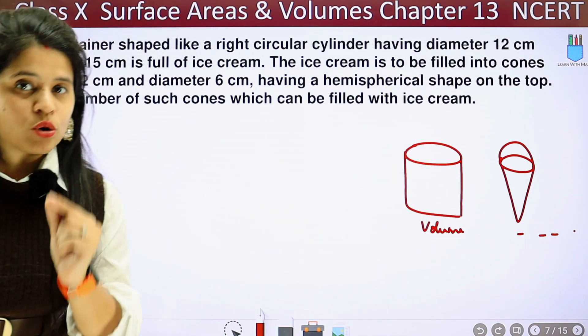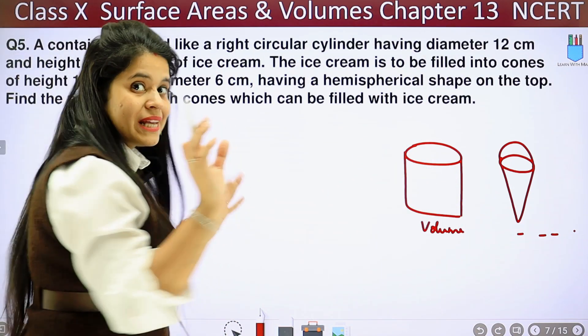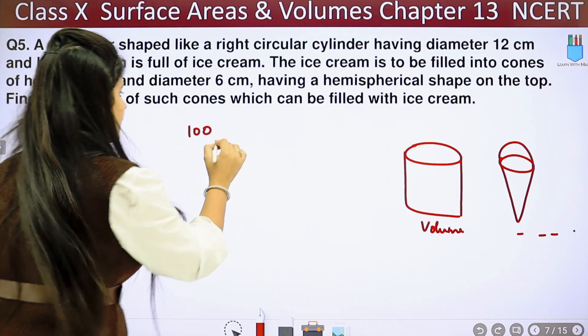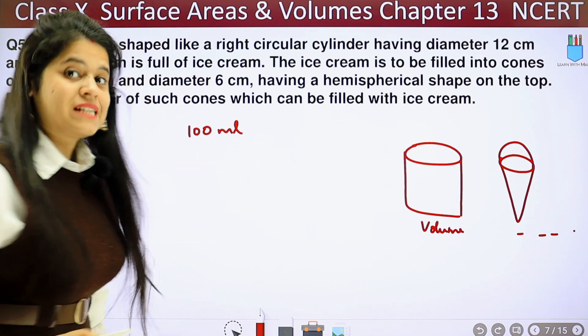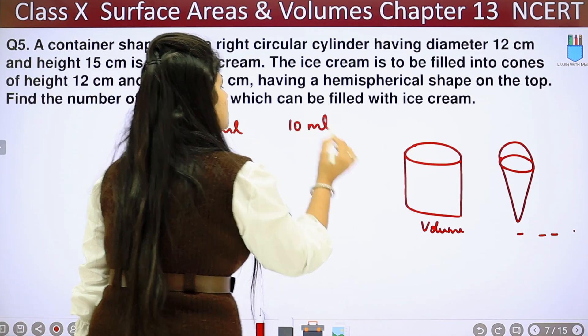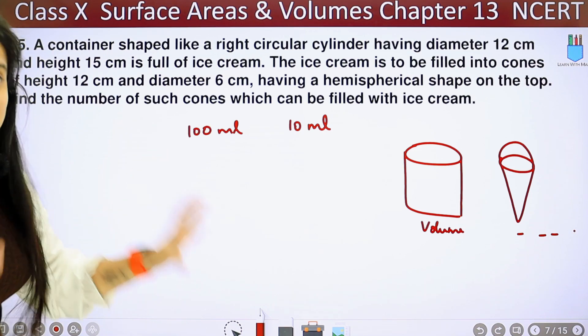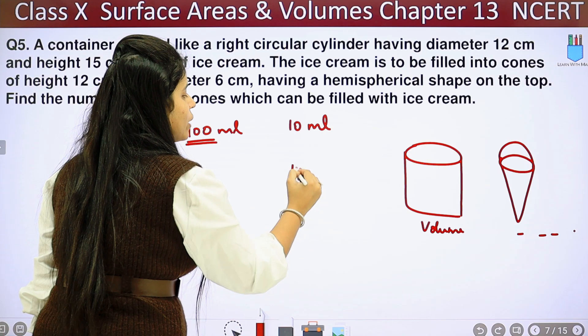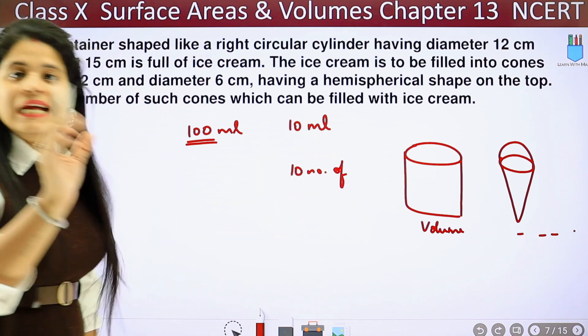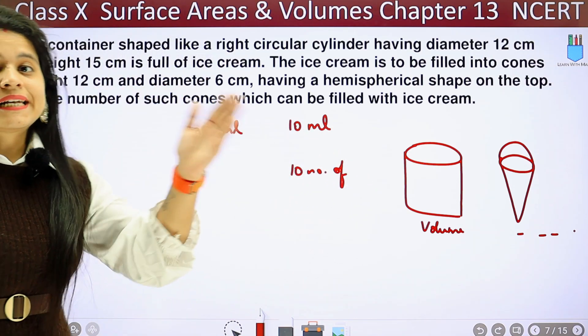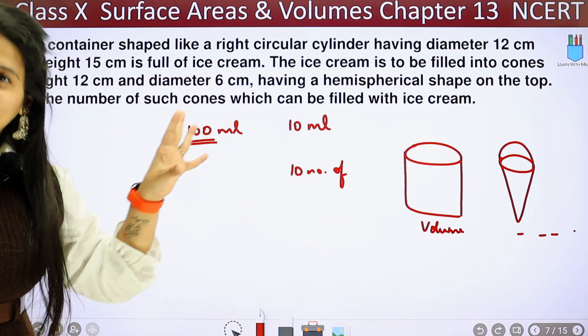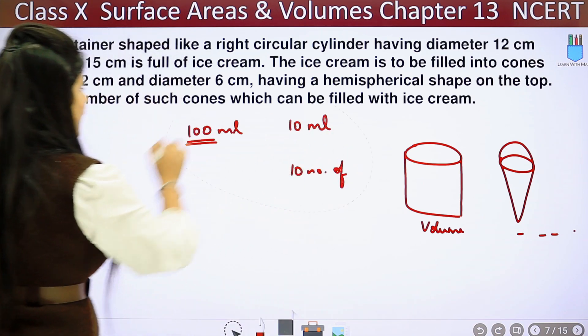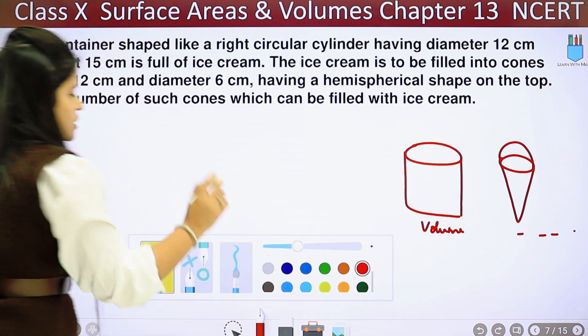When we make a cone of ice cream we keep a scoop on it so a hemispherical top is made. So how many numbers of cones will be created? We will say that if we have to take this entire ice cream, the volume of ice cream will be equal to the volume for which cones can be filled. For example, if you have 100 ml ice cream and one cone is filled with 10 ml ice cream, how many cones will you make? You will make 10 cones. Let's figure it out.